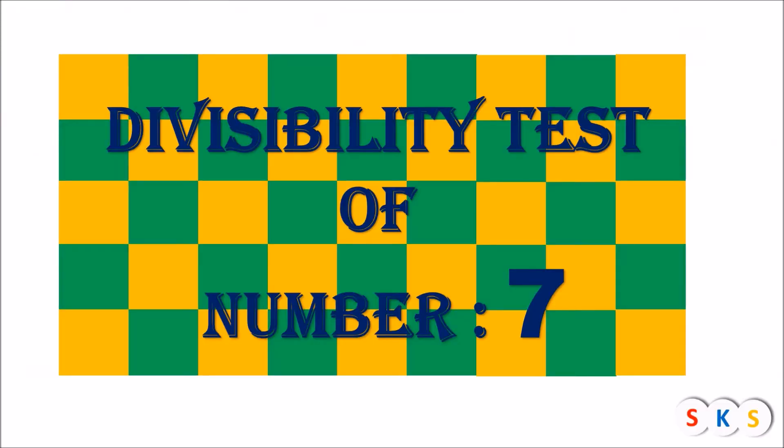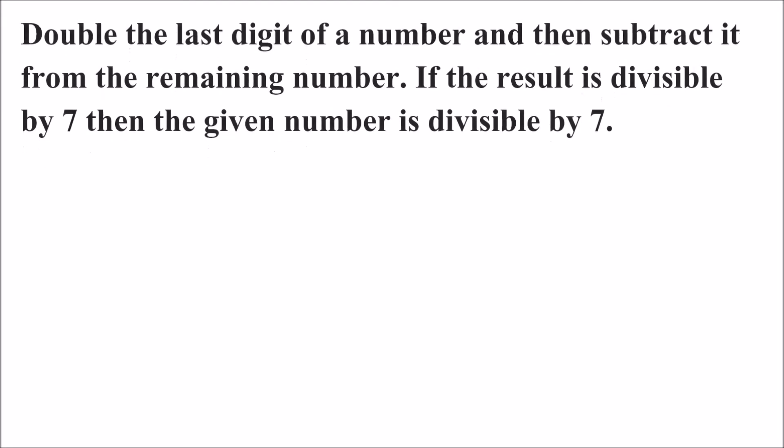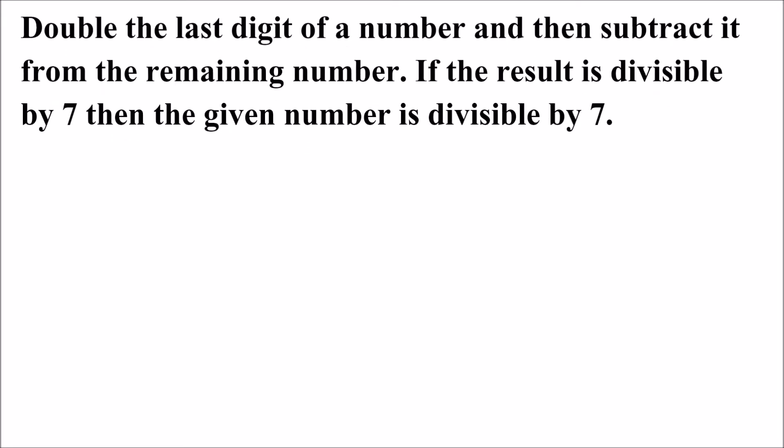Divisibility test of number 7. Double the last digit of a number and then subtract it from the remaining number. If the result is divisible by 7, then the given number is divisible by 7.